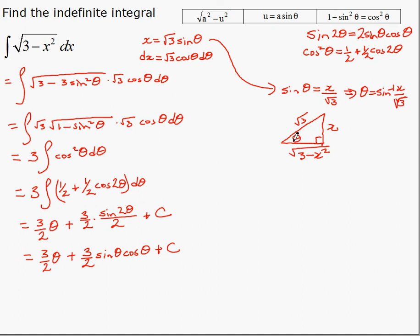Meaning the cosine of theta is adjacent over hypotenuse. So, filling in the information, then, 3 over 2 theta is here. Sine inverse of x over root 3. And times cosine of theta, which is root 3 minus x squared, over root 3. Plus a constant.